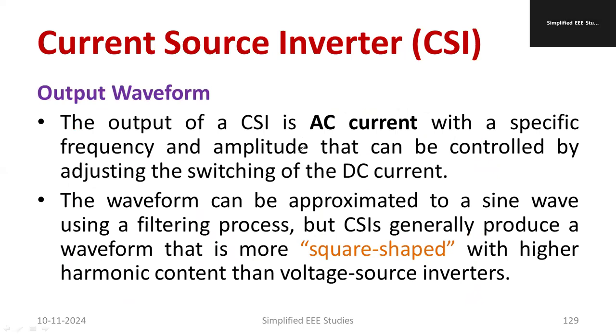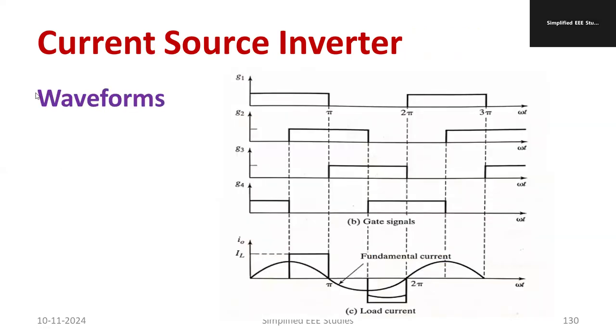If I talk about the output waveform, the output waveform will be AC current only with respect to the frequency and amplitude which you can control by using PWM. The main thing is the output is square shaped waveform. That is a major issue of current source inverter where the harmonic content is exponentially high. The output waveform will not be purely sinusoidal. It is square shaped.